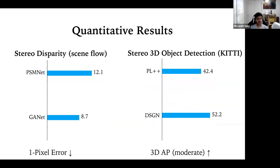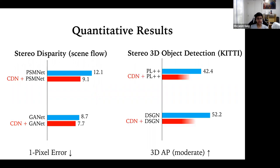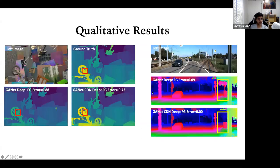Our method reduces the one-pixel error, a standard metric for stereo disparity estimation, compared to state-of-the-art networks like PSMNet and GC-Net, achieving significant improvements (lower is better). Similarly, for 3D object detection, our method improves average precision for bounding box detection compared to state-of-the-art networks like Stereo R-CNN++ and DSGN, reaching the new state-of-the-art by using depth from our CDN network.